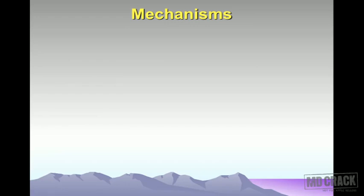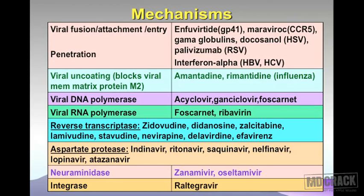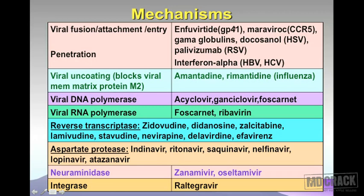There's a table here showing the various mechanisms of action of antiviral agents. The virus goes through various steps leading to DNA and RNA synthesis, starting with entry into the human cell. The left side shows the mechanism of action and the right side shows examples of drugs. In the first box, inhibition of viral fusion, attachment, entry, and penetration — a new drug called enfuvirtide attaches to GP41 and is used in HIV/AIDS.